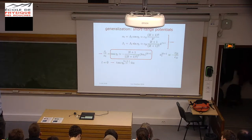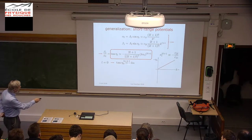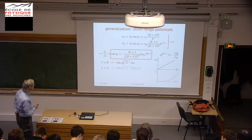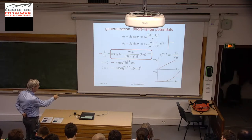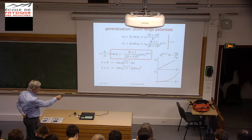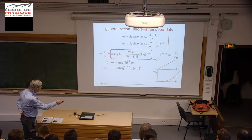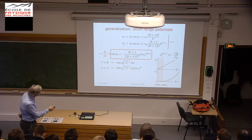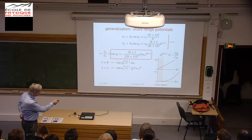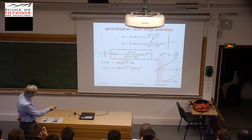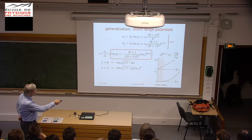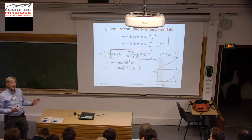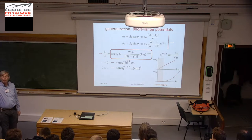The answer I will give in a moment. But we can plot this behavior: the phase shift goes linearly with k for L equals zero. For L equals 1, substituting gives the tangent of the P-wave phase shift as minus one-third k times a to the power 3. If you plot this, you see that at low values of k, the P-wave falls off with the cubic power of k. That means in the region where k is very small, you only have S-wave behavior and maybe just a little bit of P-wave scattering—effectively, you can neglect P-wave and higher-wave scattering.